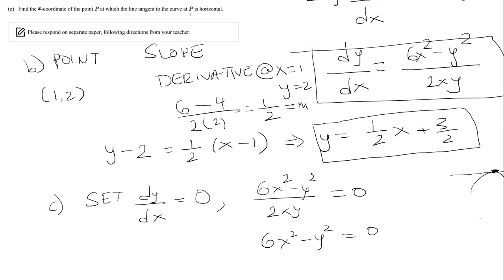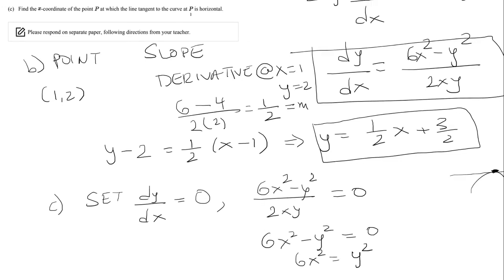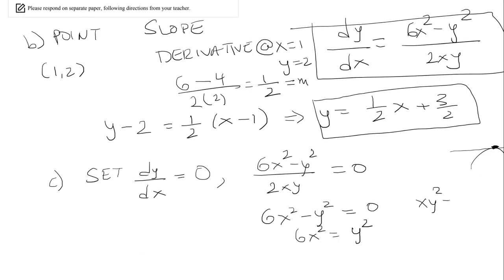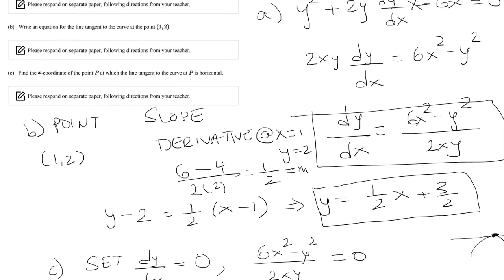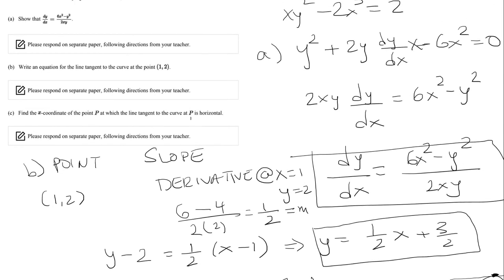And here we want to find the x-coordinate. So we can solve for y. We have 6x² = y². And we actually want to find the value of x. So let's copy what we had above. We need to find the original function. It was xy² - 2x³ = 2.